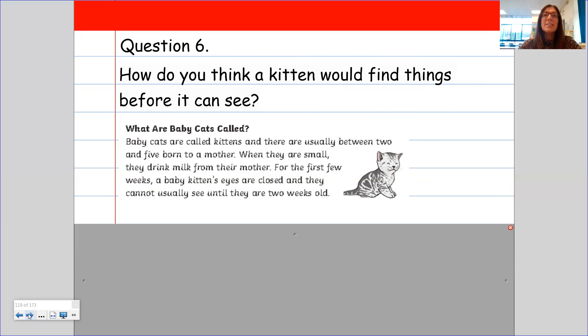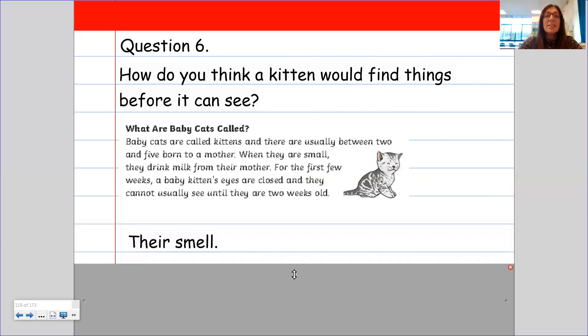So I'm going to think about the kitten's other senses. It says that it can't see, but it would be able to smell. So I think that the kitten would be able to find things using its sense of smell. And I've put their smell.